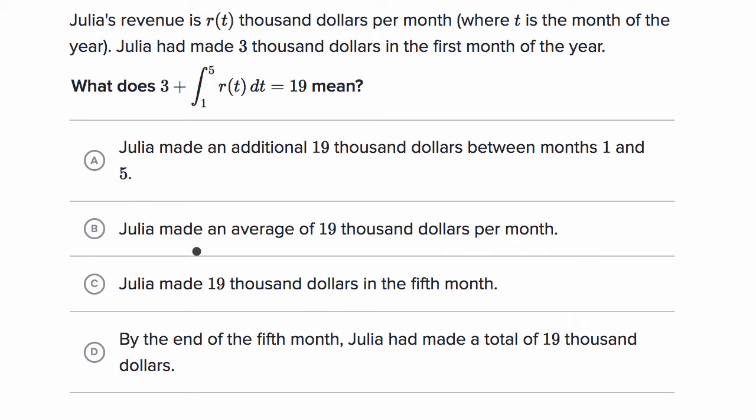All right, now let's work through this together. They tell us that she made $3,000 in the first month, and we also see this three here, so that's interesting. Maybe they represent the same thing. But let's look at this definite integral. The definite integral from one to five of r(t)dt.